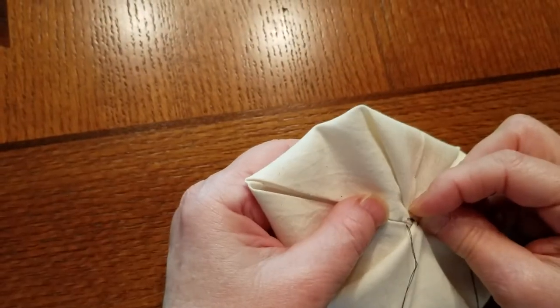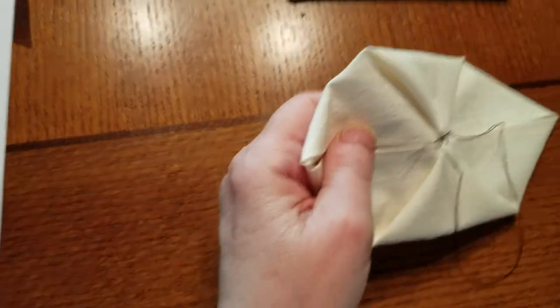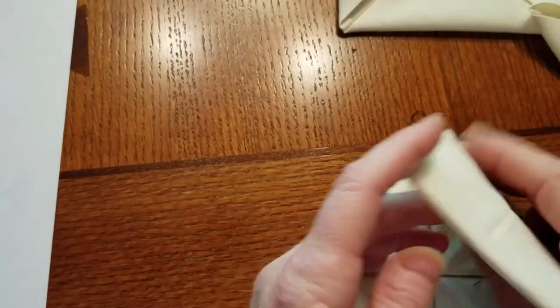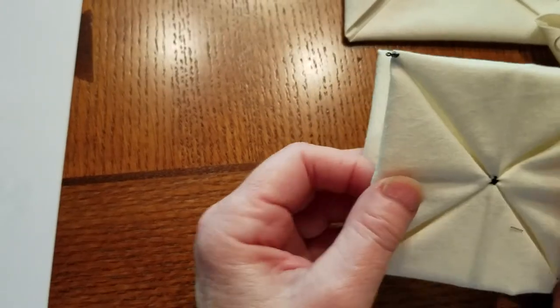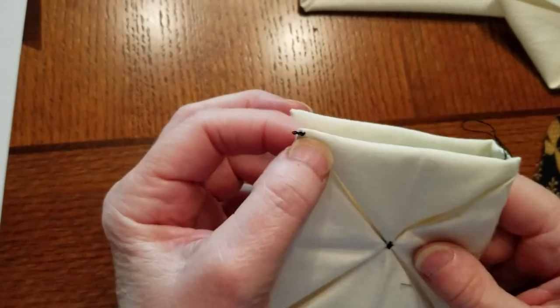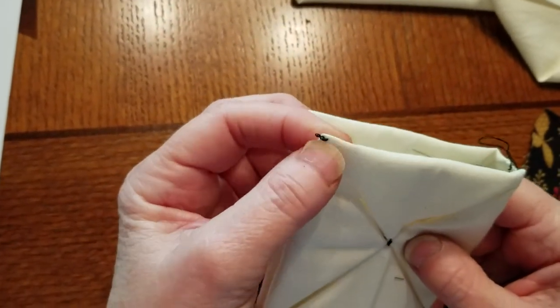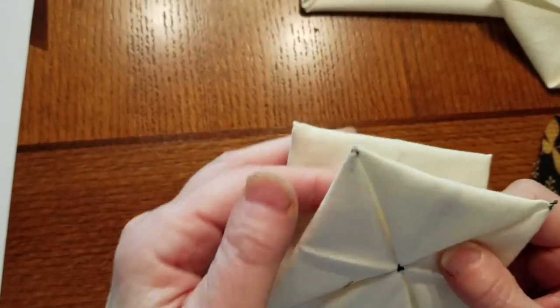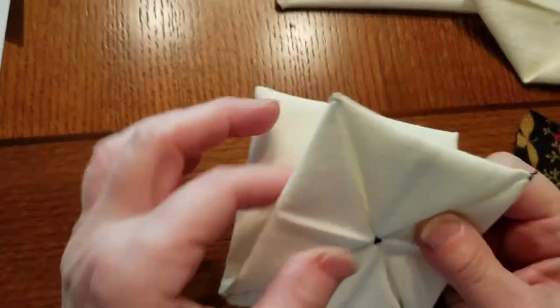When I get all finished with that I'm going to have a block that looks like this is square. And I go ahead and I put an extra little stitch up here at the corner. You have to do that separately each time. Just sort of to hold that point together so it's easy to see.